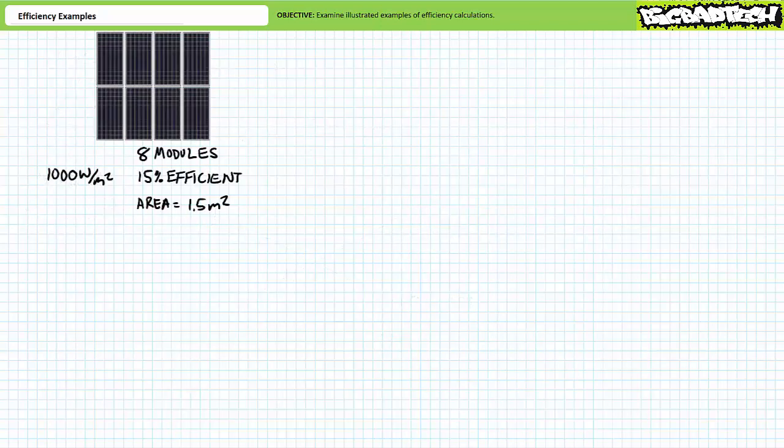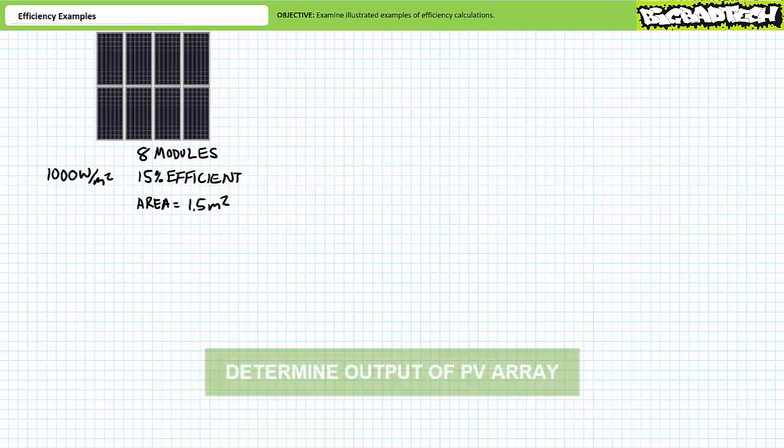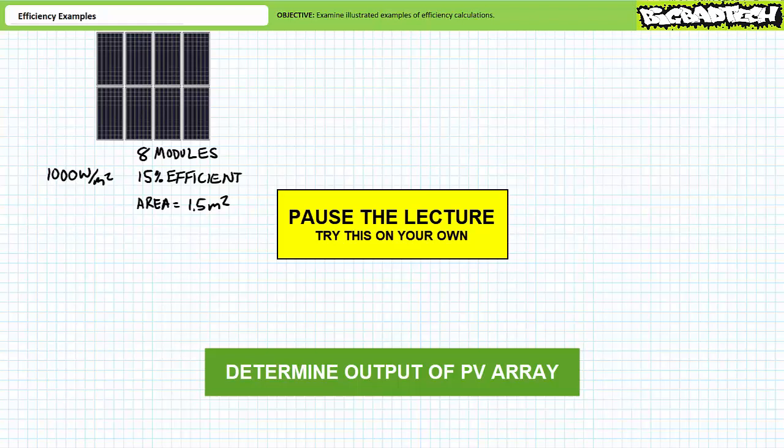Let's now examine efficiency calculations for multi-stage systems. Consider a photovoltaic system modeled as: an array of modules converting radiant solar energy into DC electrical output; wires transporting that DC output to an inverter; and the inverter converting DC power into grid-compliant AC power for export. The array is made of eight 15%-efficient modules, each one meter by 1.5 meters for 1.5 m² each. At STC (1,000 W/m²), see if you can determine the usable electrical power output for this eight-module array.